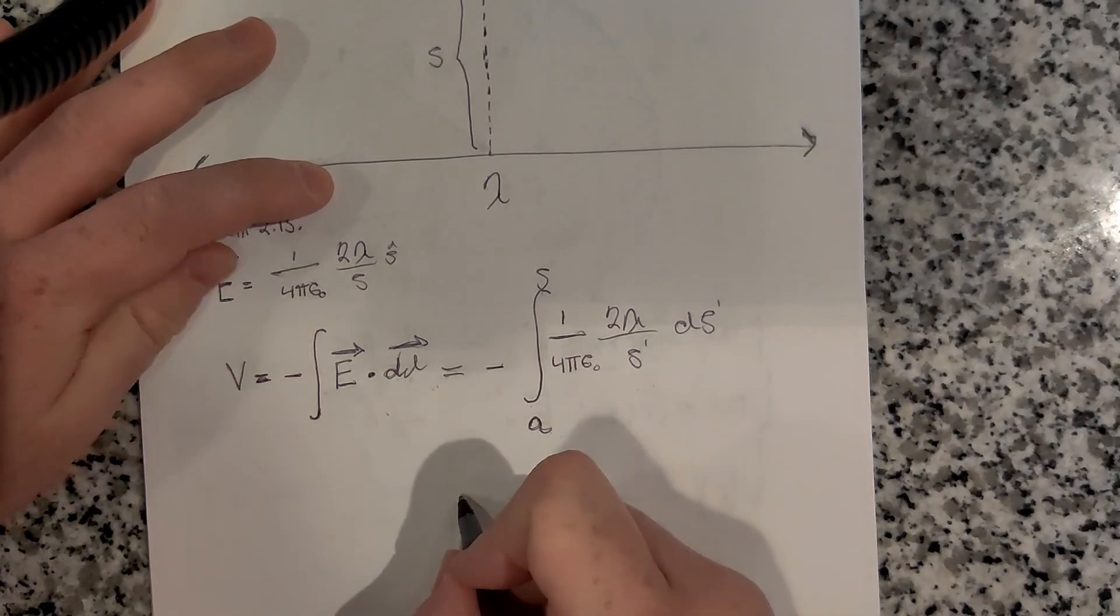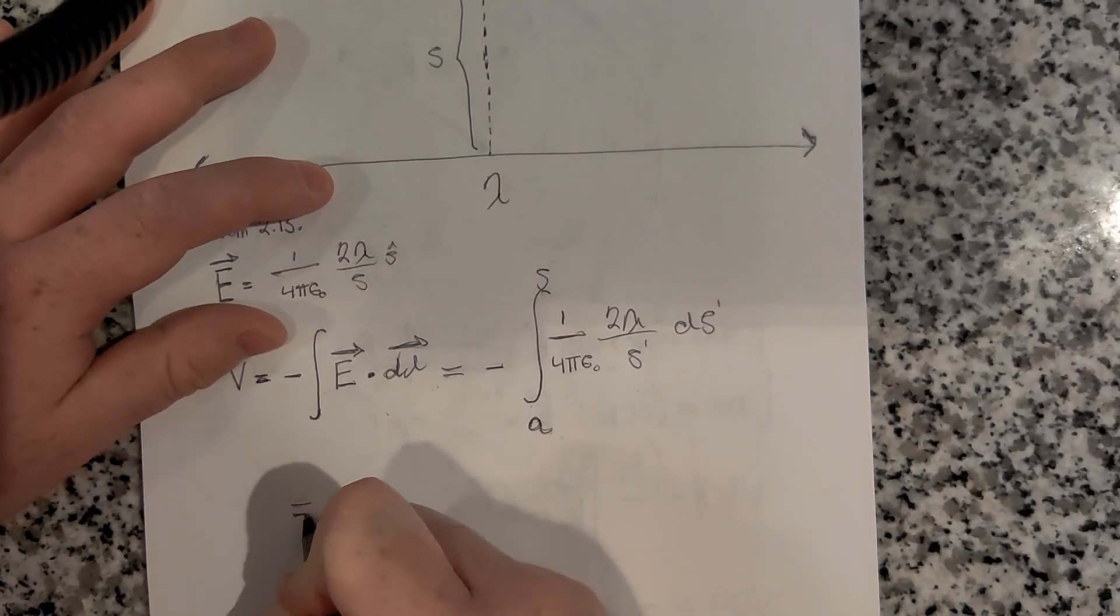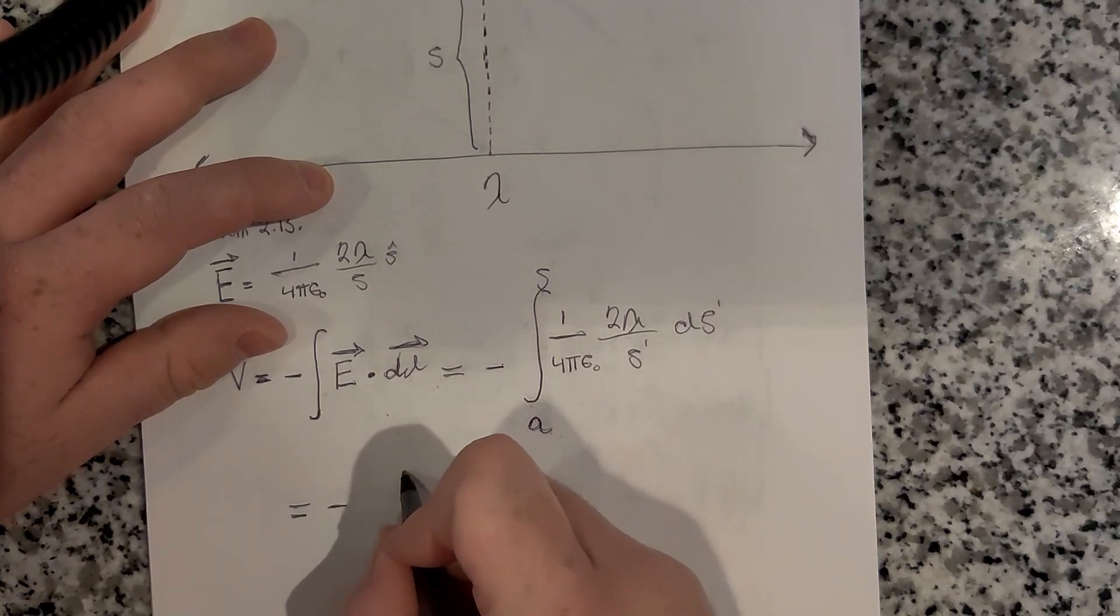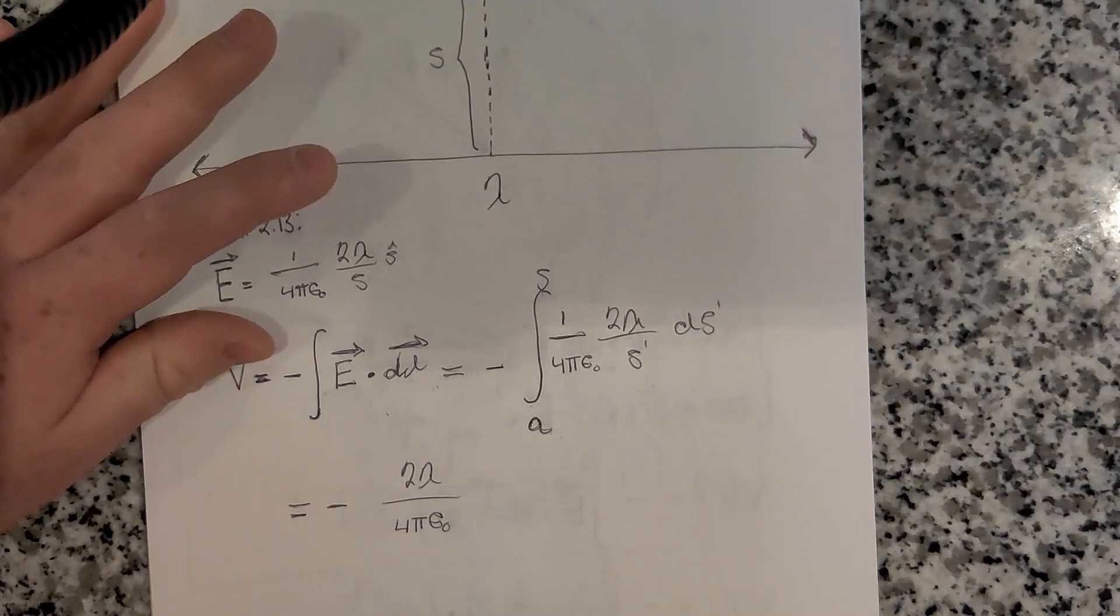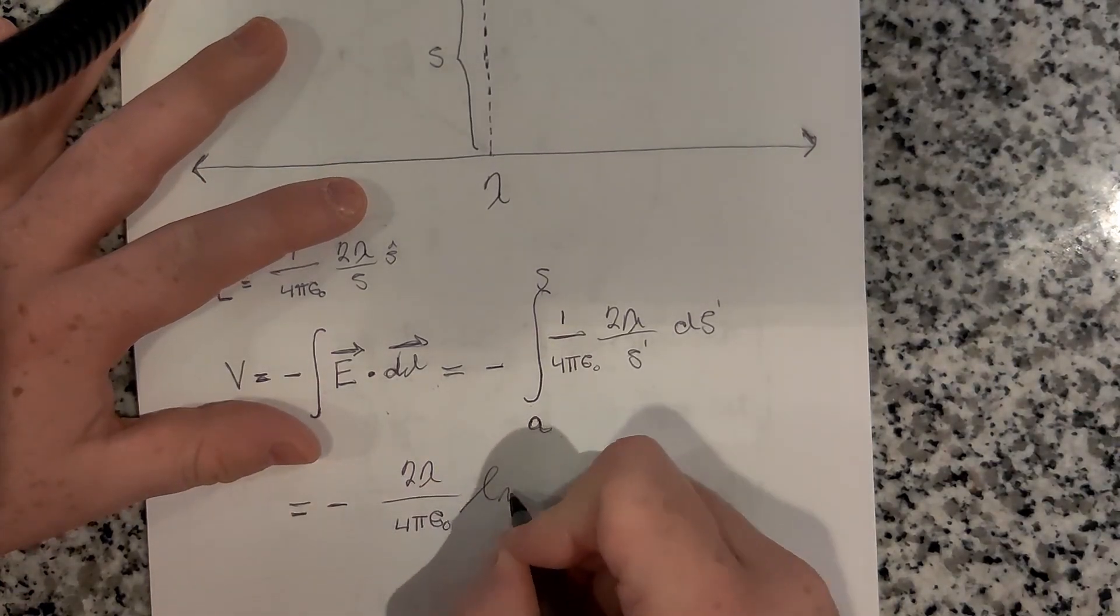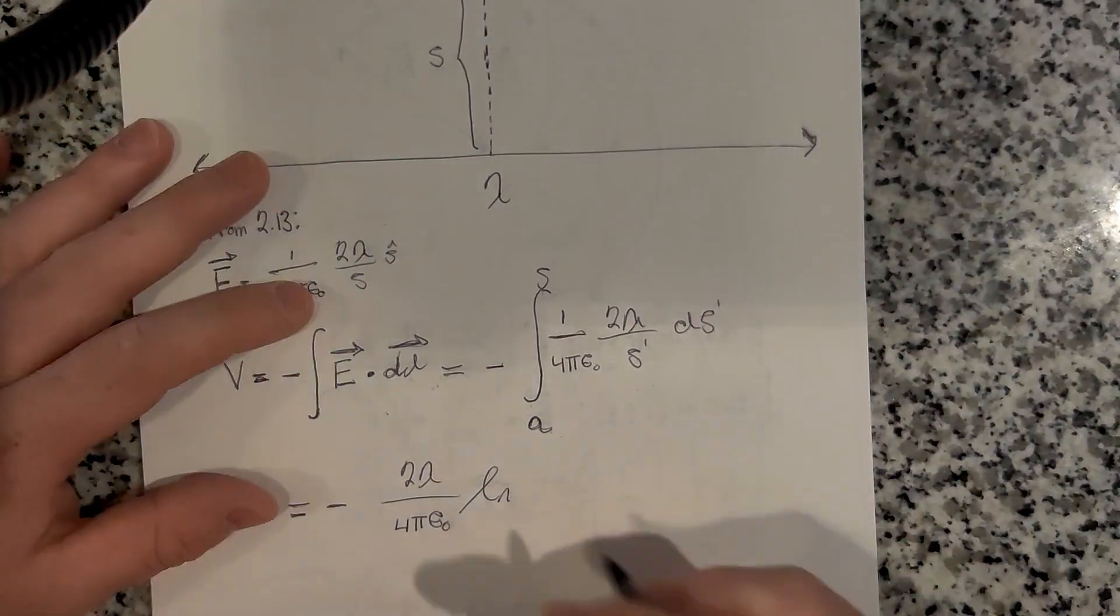That's going to be the integral of 1 over s prime with respect to s prime. So that's going to be the natural log. We have minus 2λ over 4πε₀. Oh yeah, this is why the infinity wouldn't work, because the natural log of infinity is nothing.